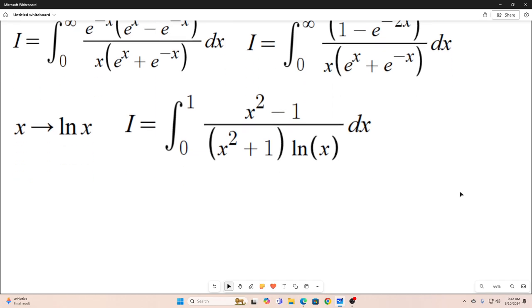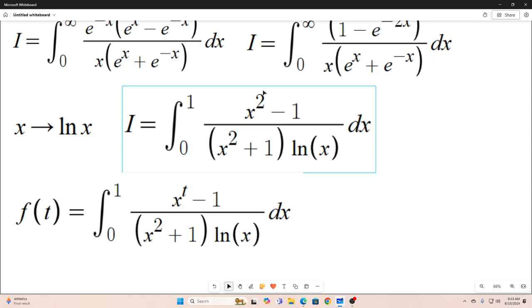All right. So next, we start our Feynman integration process. We will create a function of t that closely resembles our original integral. In this case, I just replaced this 2 as the exponent on x with a t. And the motivation for that should be fairly obvious to you at this point if you watch my videos.